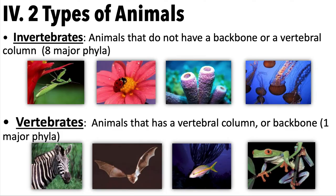Within the animal kingdom, we separate animals into two broad categories: invertebrates and vertebrates. Invertebrates are animals that do not have a backbone or vertebral column, and there are eight major phyla we'll focus on. Vertebrates do have a vertebral column or backbone — there's one major phylum for those, which includes humans: phylum Chordata.